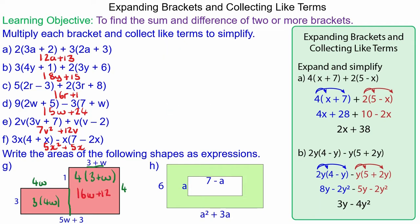For question h, we have the area of the largest rectangle which is 6 lots of a squared plus 3a, minus the smaller rectangle in the middle which is a lots of 7 minus a. So we have 6a squared plus 18a, negative a times 7 which is negative 7a, and negative a times negative a which is positive a squared. And collecting the like terms we have 7a squared plus 11a.